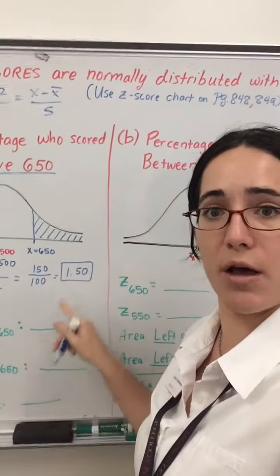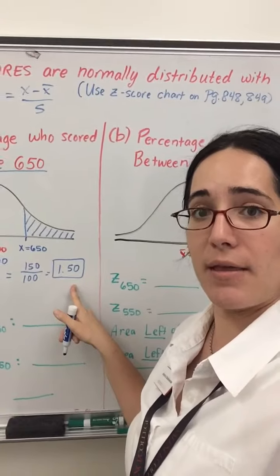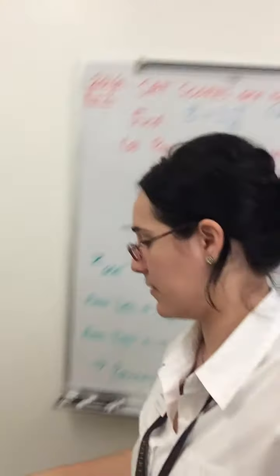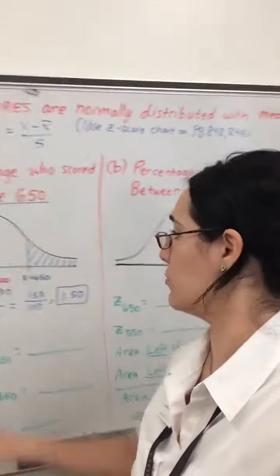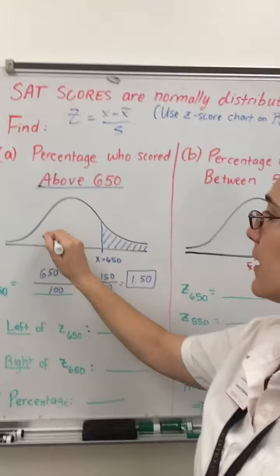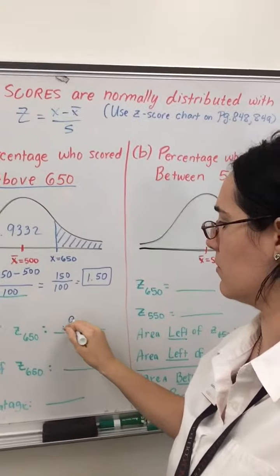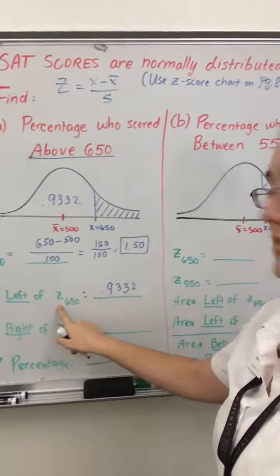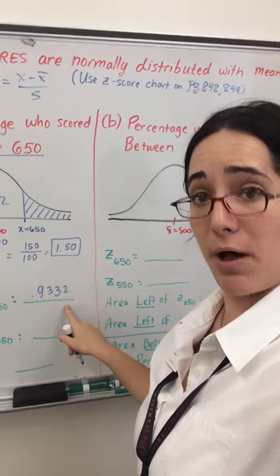It's positive, so we'll look up in the positive z-chart on page 849 of our book to find out the area to the left of it. And when I do that, I get an area of .9332. So the area to the left of my z-score is .9332.